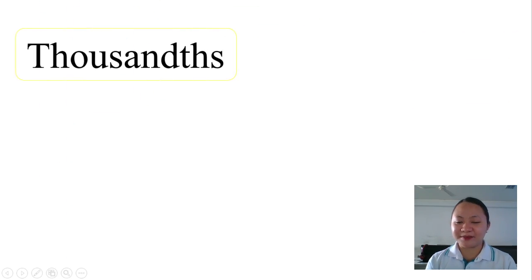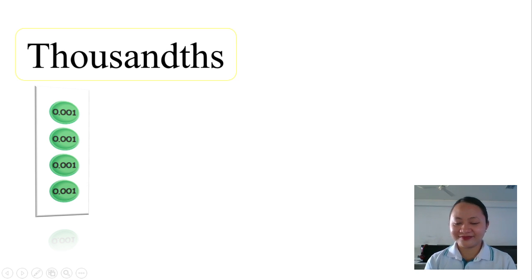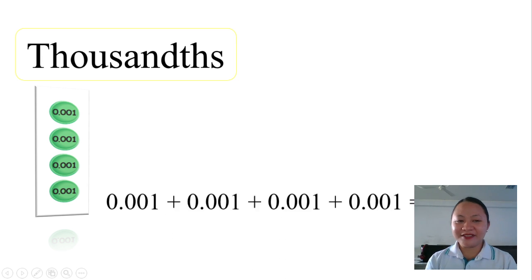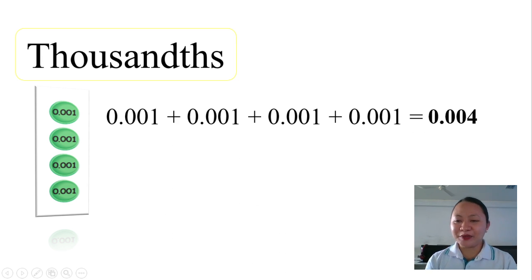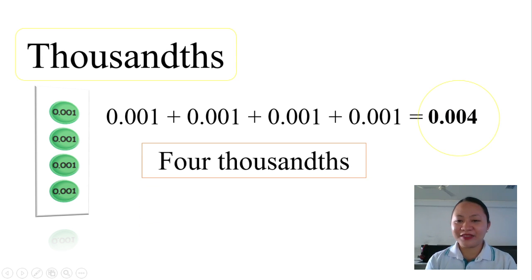Speaking about thousandths, can you tell me what is the decimal represented by these number disks? We write it as 0.004, adding all 0.001. We read it as four thousandths.